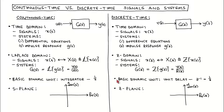We draw block diagrams of discrete time systems using gain, summation, and unit delay blocks. One can therefore think of the unit delay block as the basic dynamic unit of discrete time systems. The transfer function of a unit delay is 1 over z. Analogously, we draw block diagrams of continuous time systems using gain, summation, and integrator blocks. The basic dynamic unit is therefore the integrator, or 1 over s. It is important to note that this does not mean that the unit delay can be thought of as a discrete time integrator — the discrete time integrator has a different transfer function.